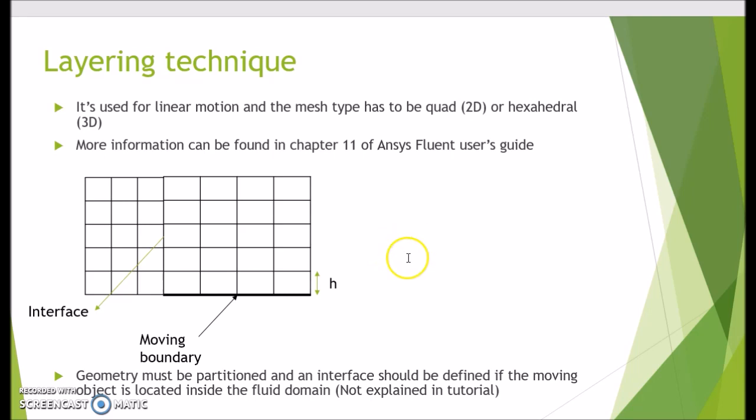If you want to learn more about it, there's more information in chapter 11 of ANSYS Fluent user guide. Basically when you have a moving boundary, for example in this case if this wall is moving upward, we've got this first layer of mesh. As this wall moves, the height of this layer decreases and depending on the mesh setting, it's gonna collapse when it reaches a certain height, and then it goes to the second layer and it's gonna repeat the same algorithm.